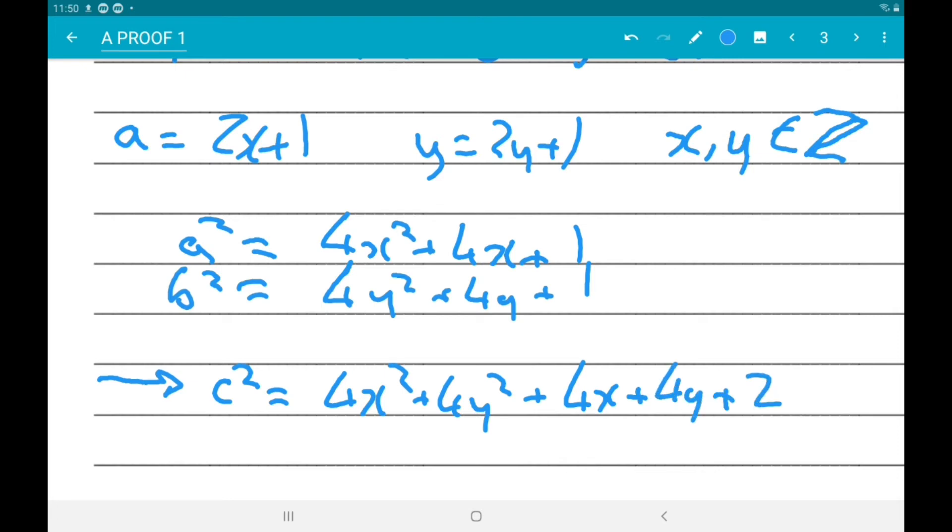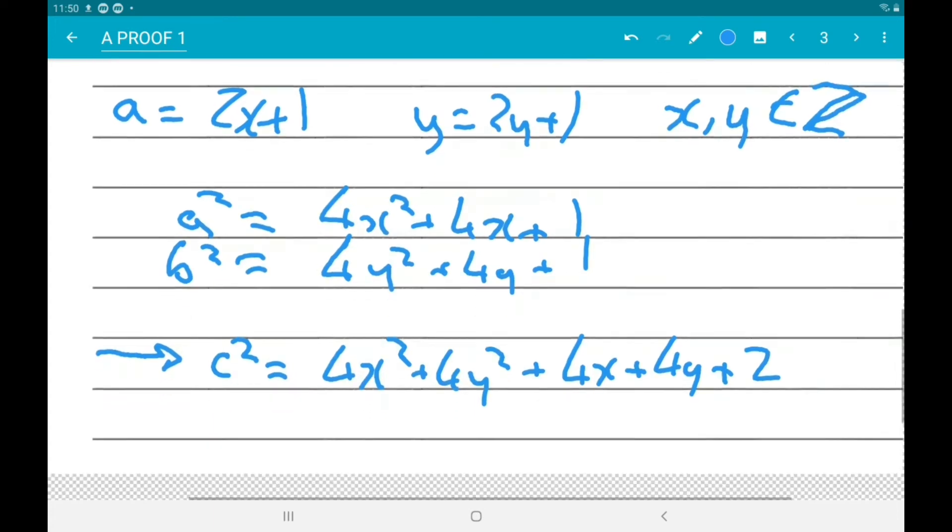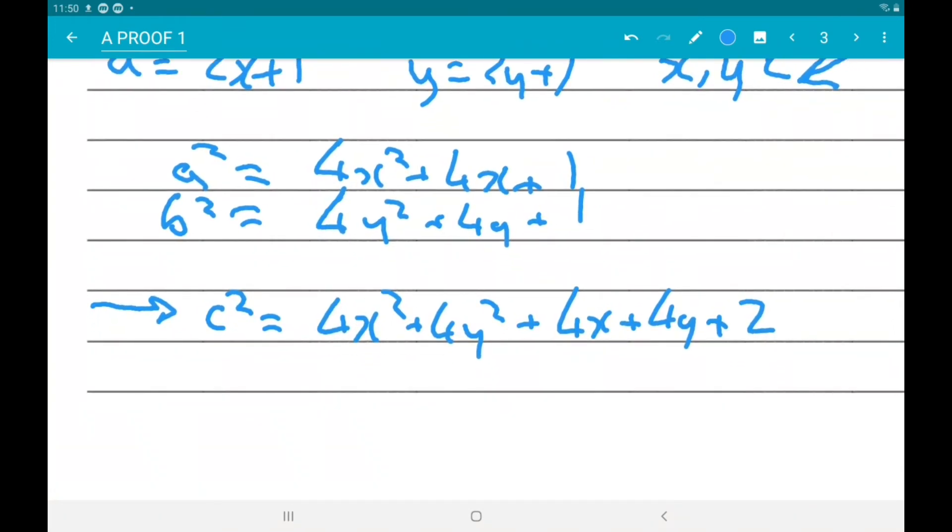Now, that has a common factor of 2, so c squared is even. And that tells us that c is even.